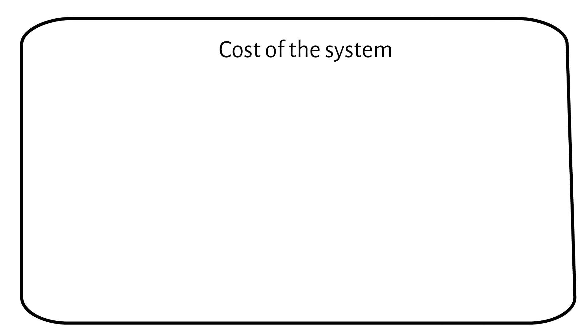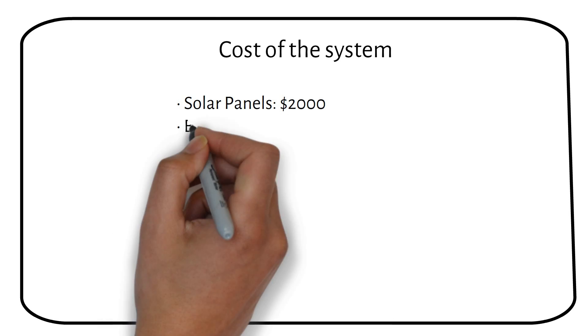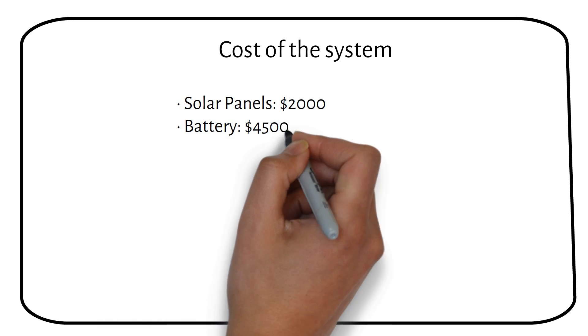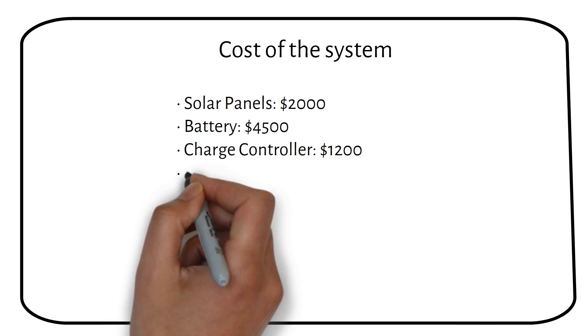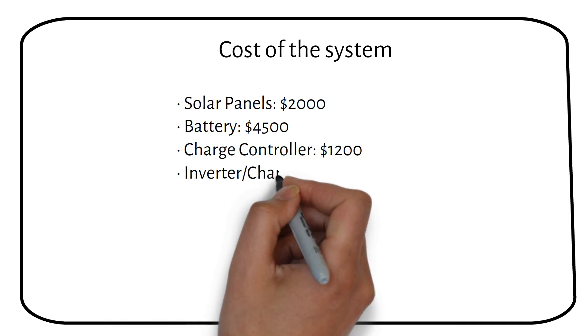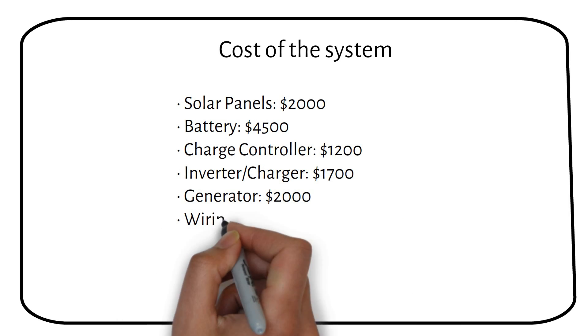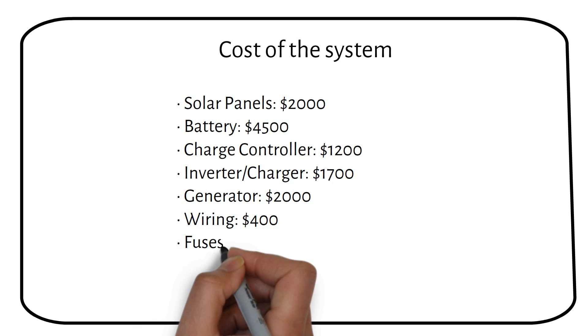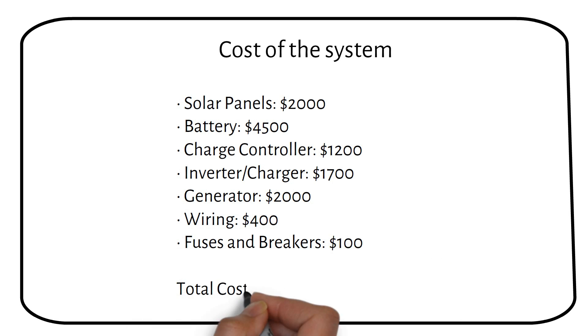Let's break down the cost of this 5 kW off-grid solar system. Solar panels, 2000 dollars. Battery, 4500 dollars. Charge controller, 1200 dollars. Inverter charger, 1700 dollars. Generator, 2000 dollars. Wiring, 400 dollars. Fuses and breakers, 100 dollars. The total cost of the system is approximately 12,000 dollars.